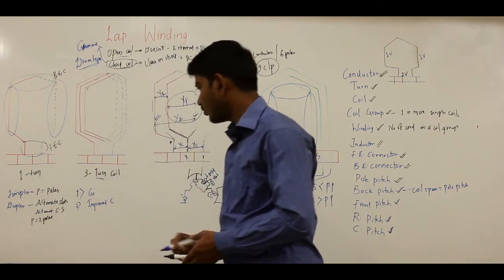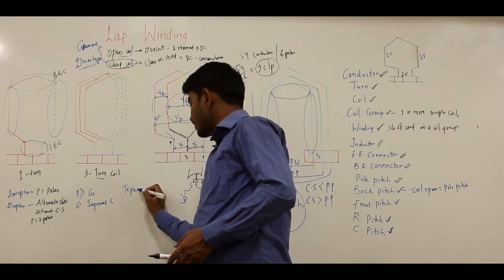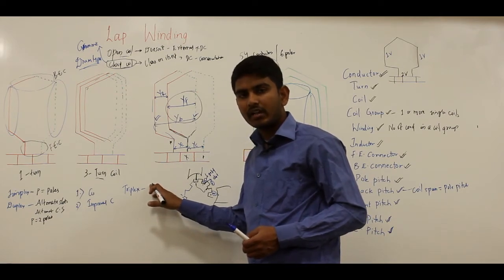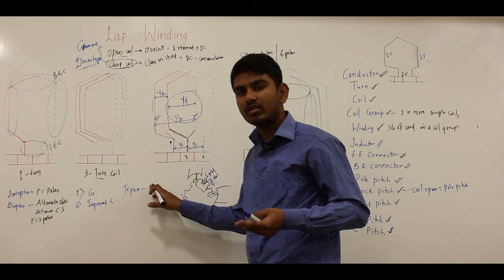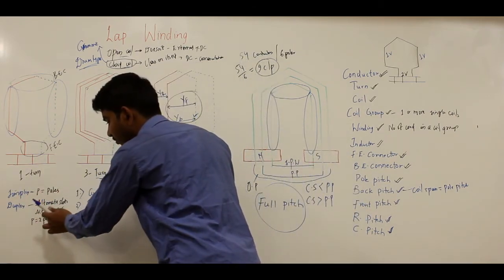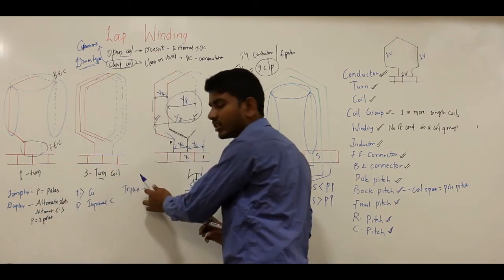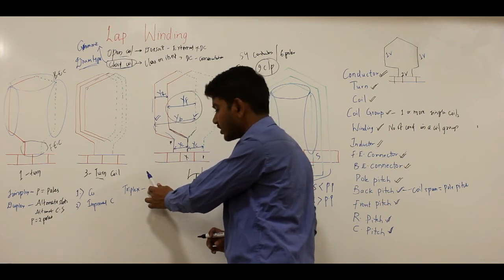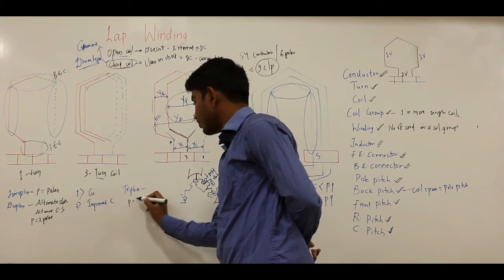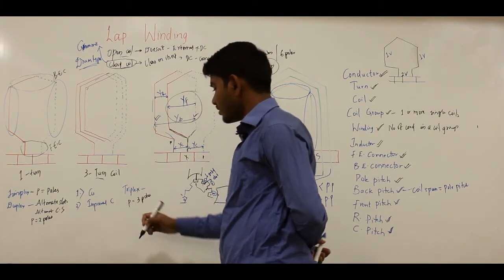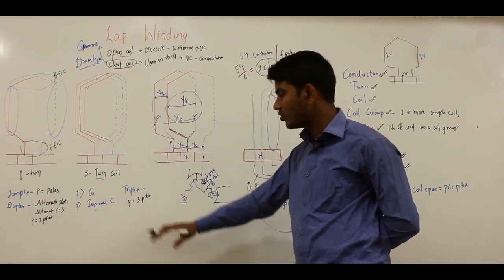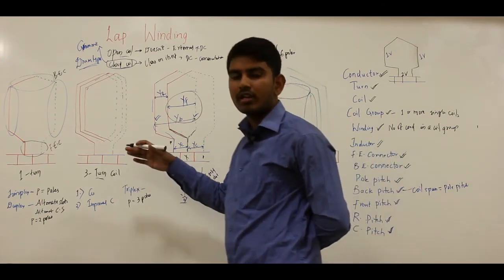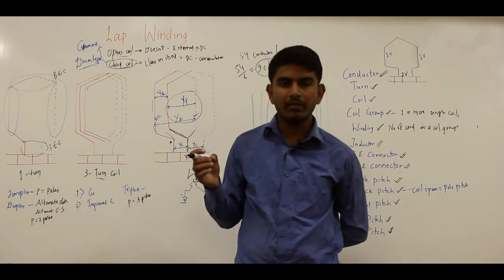In triplex winding, every third armature slot is occupied and connected to every third commutator segment, giving parallel paths equal to three times the number of poles. As more simplex windings are employed, the number of parallel paths keeps increasing. These windings can also be called multiple or parallel windings.